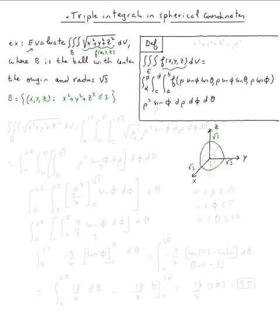We want ρ to go from 0 to √3. We want φ to go from 0 to π, and we want θ to go from 0 to 2π. This way we can cover the whole sphere.